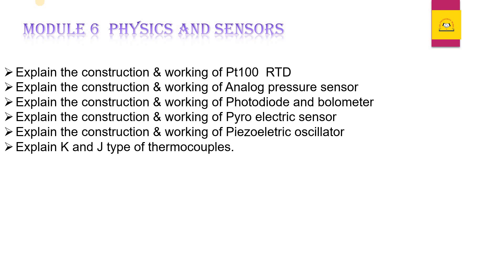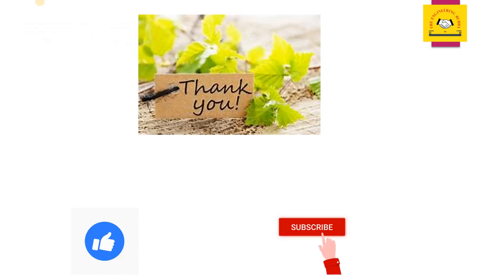Chapter 6, Physics and Sensors, is an important chapter with up to 20 marks of questions. Important questions include: Explain the construction and working of an analog pressure sensor and Platinum 100 RTD. Explain the construction and working of a piezoelectric oscillator and pyroelectric sensor. Explain with a neat diagram the working of a photodiode and bolometer. Explain K-type and J-type thermocouples.